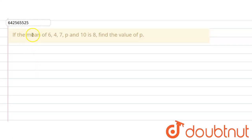The given question says that if the mean of 6, 4, 7, p and 10, these are the 1, 2, 3, 4, 5 terms which we are given and the mean of these 5 terms is 8, we are supposed to find out the value of this observation which is p. Find the value of p.